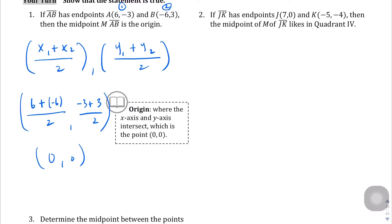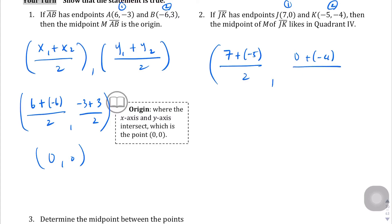Question number 2 for midpoints on the coordinate plane. X1 is 7 plus negative 5 divided by 2, and Y1 is 0 plus negative 4 divided by 2. Seven plus negative 5 is 2 over 2, which is 1. Zero plus negative 4 is negative 4, divided by 2 is negative 2. So the midpoint is 1, negative 2.